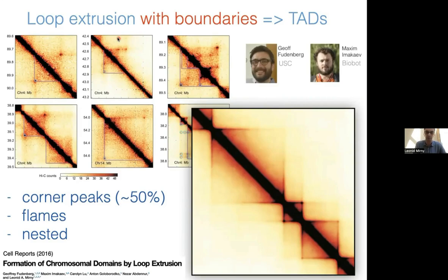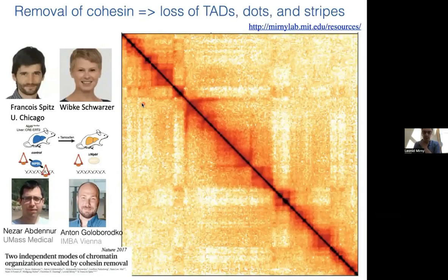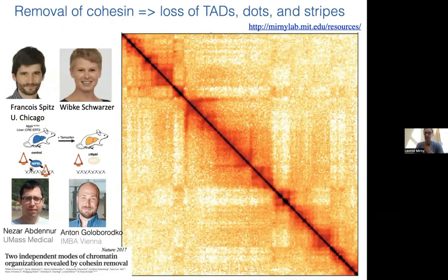This work was led by Max Imakaev and Jeff Fudenberg, who is now a professor at the University of Southern California. What Max, Jeff, and others showed is that this process of loop extrusion can reproduce many features seen in Hi-C maps close to the diagonal. That immediately made several predictions—one being that if you get rid of the loop-extruding protein, you should see these domains vanishing. We were lucky to collaborate with François Spitz and his postdoc David Schwarzer, who did a really amazing experiment.